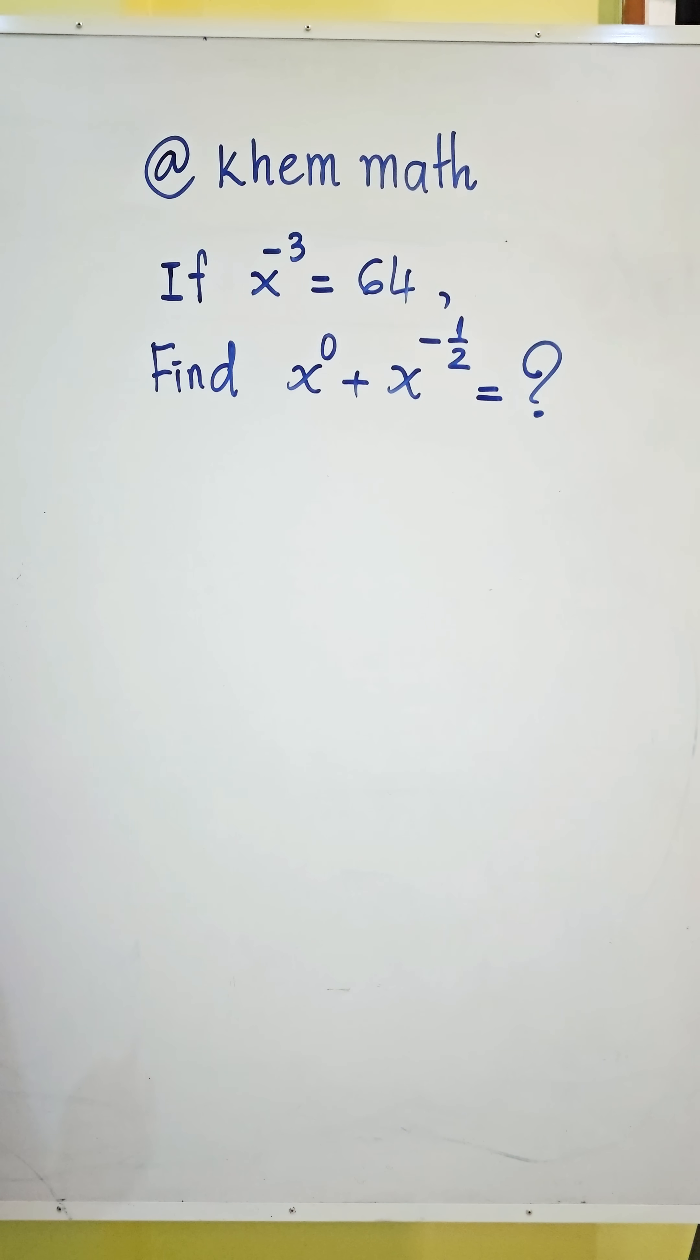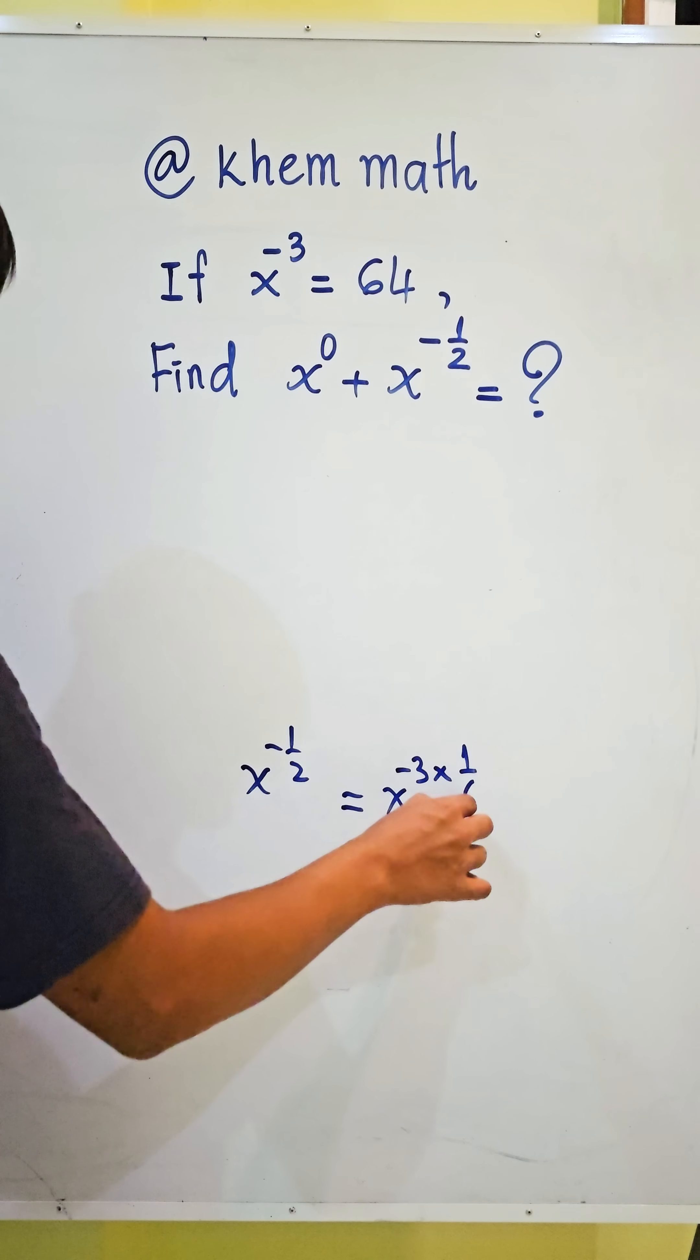Okay, look here. x power negative 1 divided by 2, we can write it equal to x power negative 3 times 1 divided by 6.